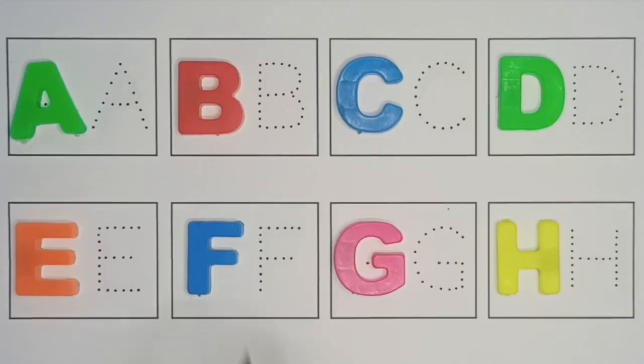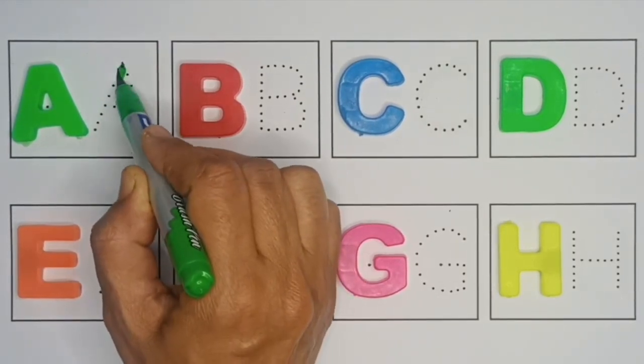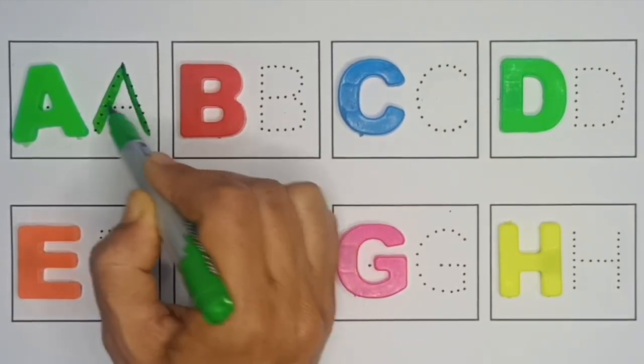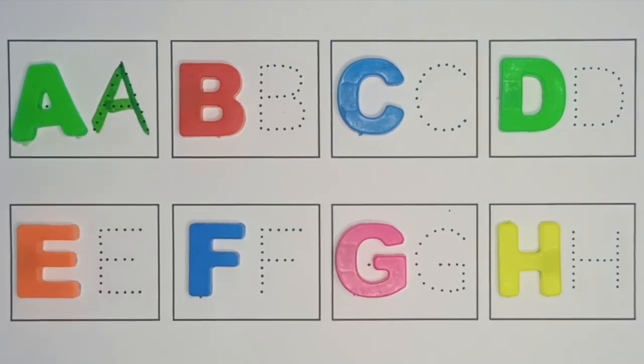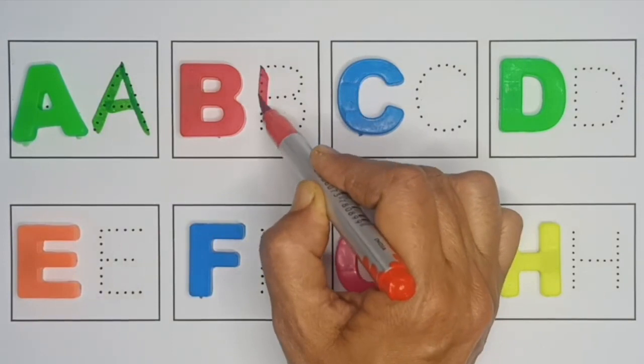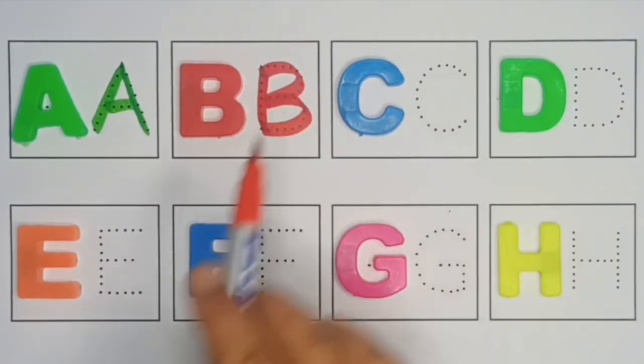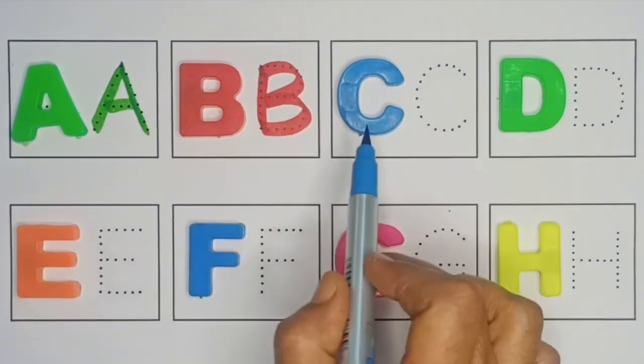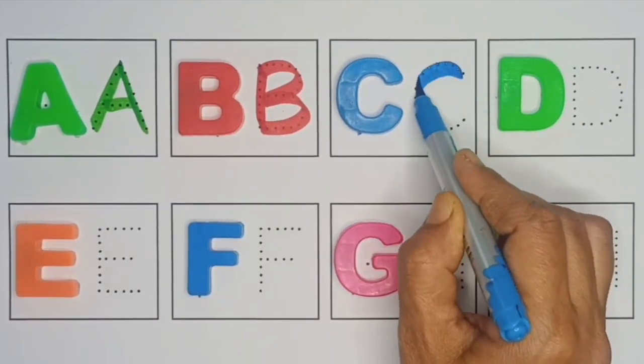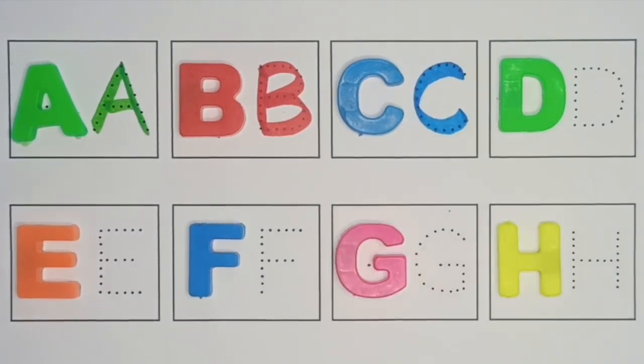You. A, A for apple. B, B for ball. C, C for cat. D, E, F.